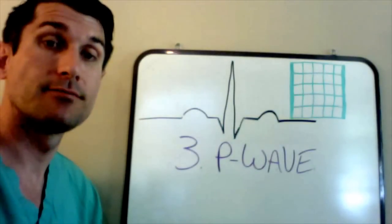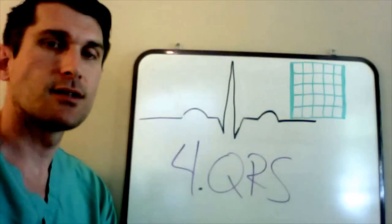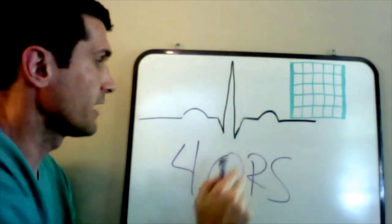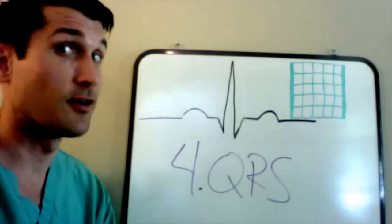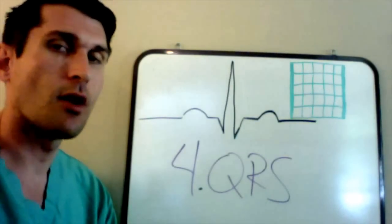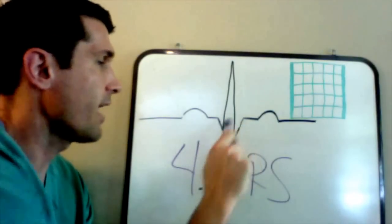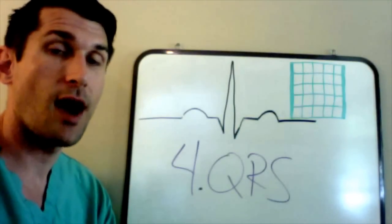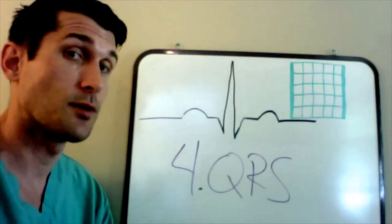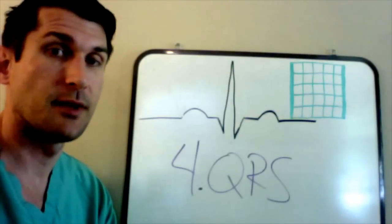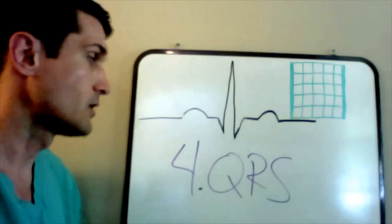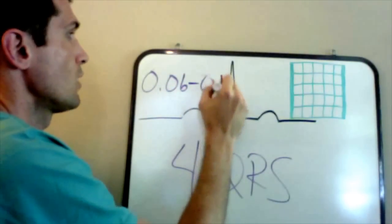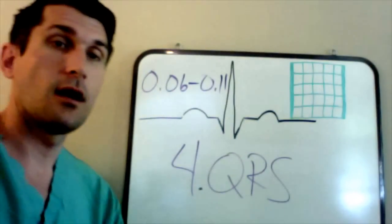Step four is the QRS complex. Ask yourself: is there a QRS, and what is its length? The QRS is measured from the beginning of the Q wave to the end of the S wave, and that should be 0.06 to 0.11 seconds — greater than one small box (0.04s) but less than three boxes (0.12s).